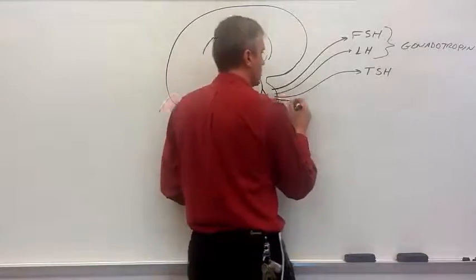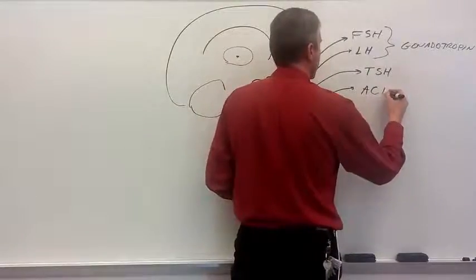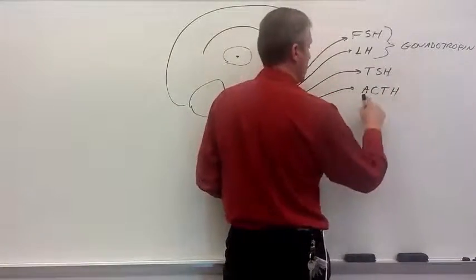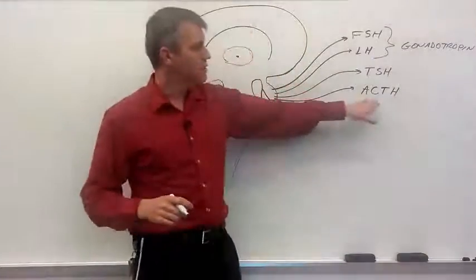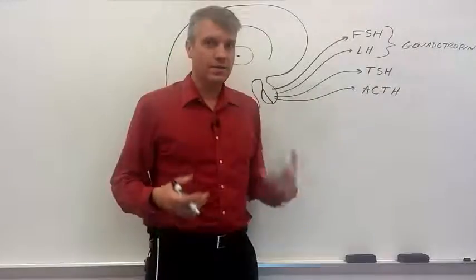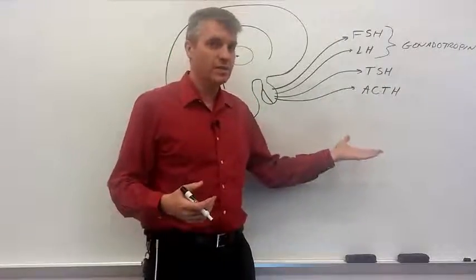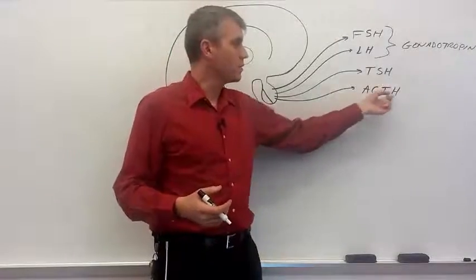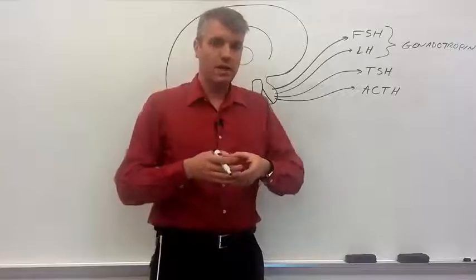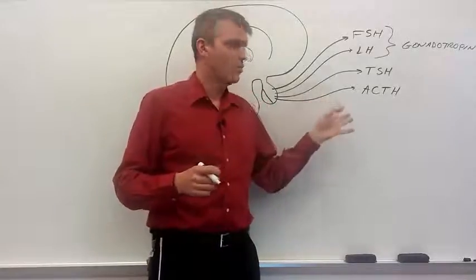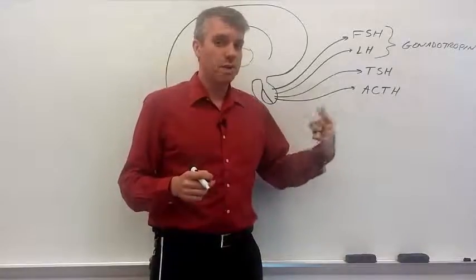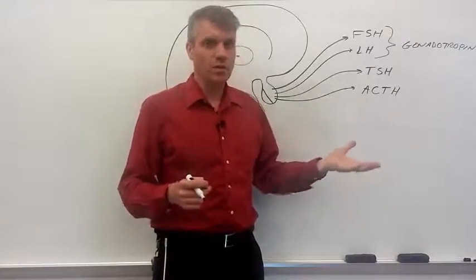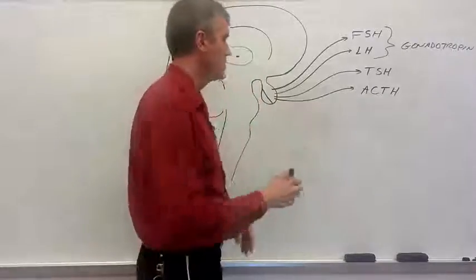Next hormone, ACTH or Adrenal Corticotropic Hormone. This hormone affects the adrenal gland, and yet again the name tells you what it does. Adrenal Corticotropic Hormone. It causes the adrenal glands to grow a little bit, but more importantly it encourages the adrenal cortex to release cortisol and other cortical hormones, but mostly cortisol as I understand.